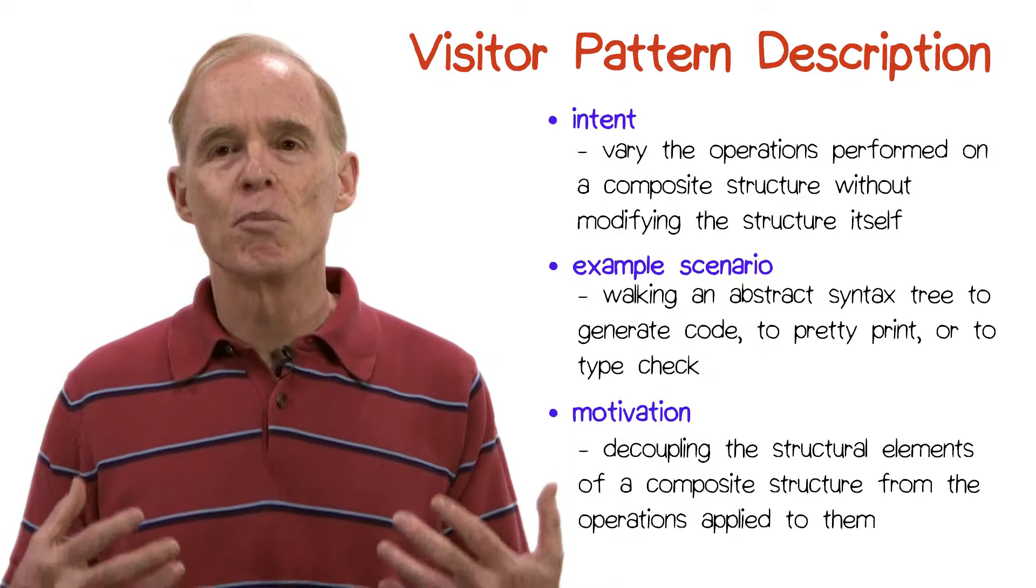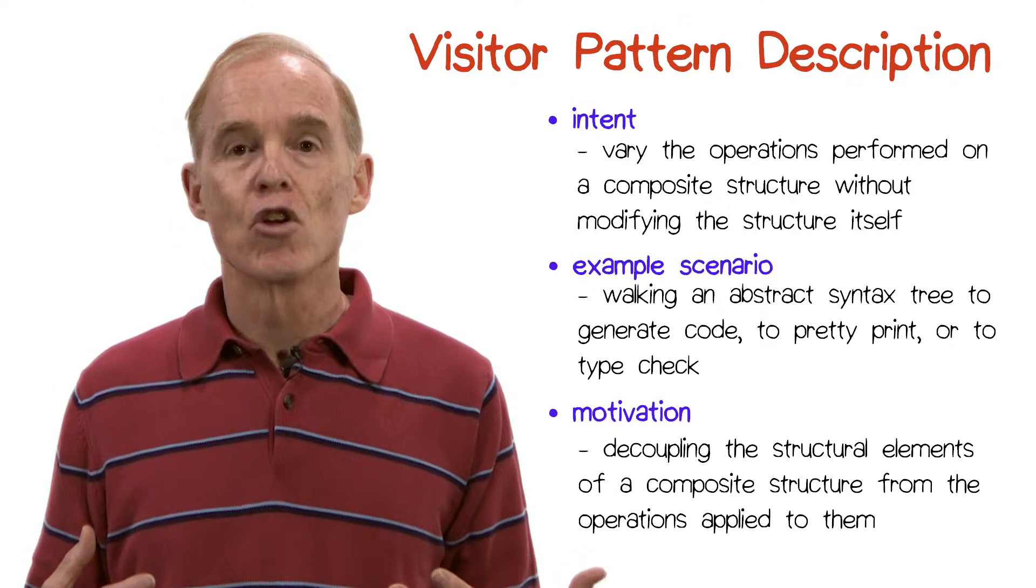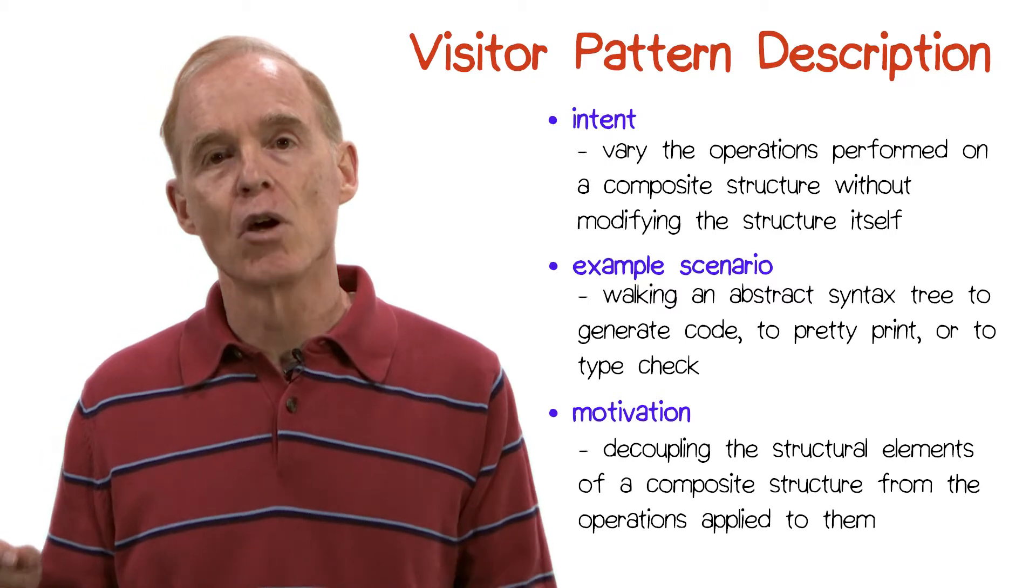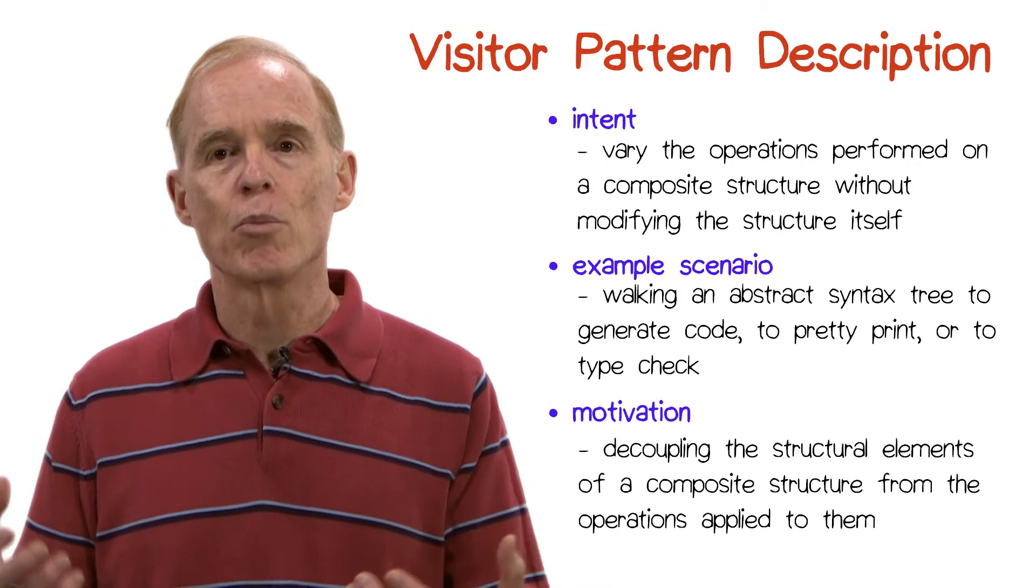If you think about this, this means that there are two factors that control how you are applying the operations. One is the data structure itself, which may have many different kinds of nodes, and the other is the class of operations, such as code generation, pretty printing, and type checking.